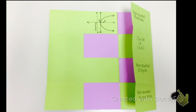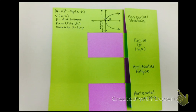Then to the left of that picture I'm going to write the equations for a horizontal parabola. So Y minus K squared equals 4P times X minus H. The vertex is at HK.